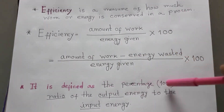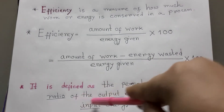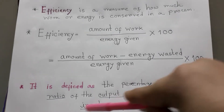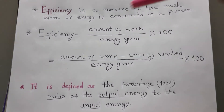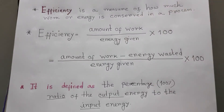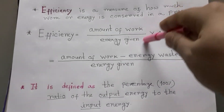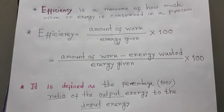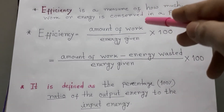It is defined as the percentage ratio — the ratio of the amount of output energy to the input energy. This is the output energy and this is the input energy. The amount of work we get is the output energy, and the amount of work that we input in the system is the input energy. We multiply it by 100 to get the percentage. So it is clear that efficiency is a measure of how work or energy is conserved in a process, or in a system, or in a machine.